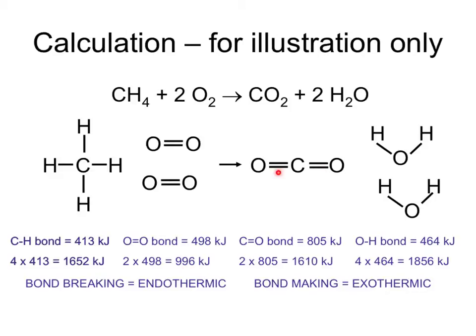New oxygen-carbon bonds give out 805 kilojoules each, which is 1610 kilojoules, and new oxygen-hydrogen bonds give out 464 kilojoules each, making 1856 kilojoules. So even though energy is required to break the existing bonds, quite a large amount of energy is given out making the new ones.